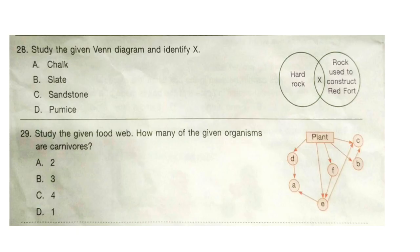Question 28: Study the given Venn diagram and identify X. X is hard rock and X is used to construct Red Fort. The correct answer is option C — Sandstone.